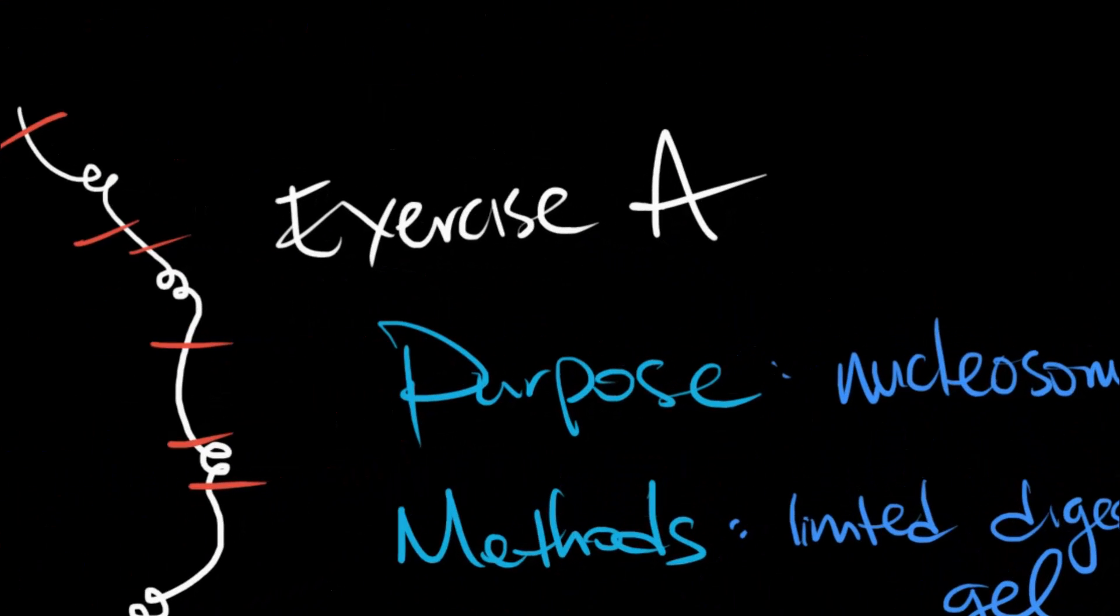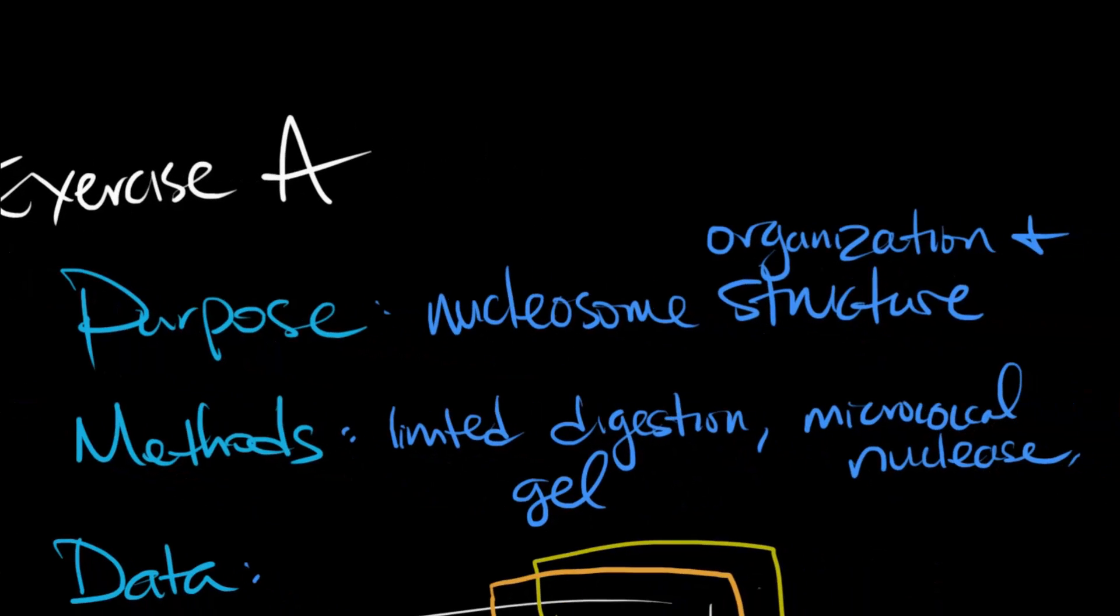Now, on to exercise A. Read through and look for the four steps. Pause the video now. For the purpose, study nucleosome organization and structure. Methods, limited digestion with micrococcal nuclease, so cutting up the linkers but not the nucleosomes, and in a limited manner, meaning it wasn't digested completely but stopped early. Not mentioned in this page, is the fact that Kornberg isolated the DNA, denatured the proteins, so that all he had left was DNA, then he ran it on a gel.